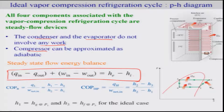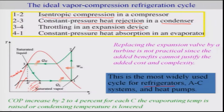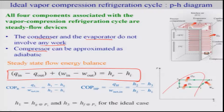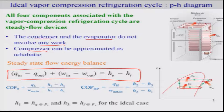The coefficient of performance for the refrigerator is Q_L divided by W_net_in. One can also describe this ideal vapor compression refrigeration cycle on a P-H diagram in addition to the T-S diagram. Since a throttling process is used, enthalpy H is constant. On a P-H diagram, three of the four process lines are straight lines, and the energy transfer is directly related to the length of each process line.